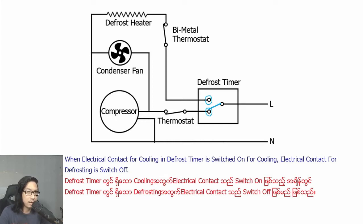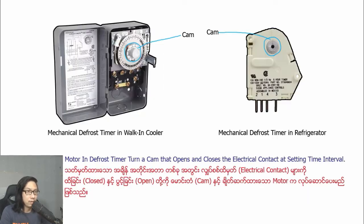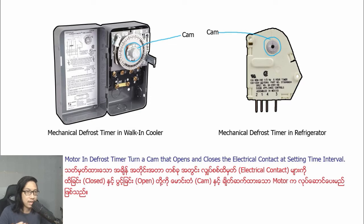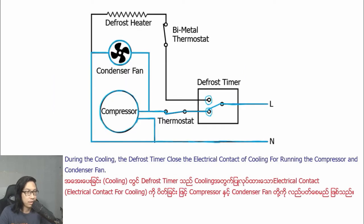When the electrical contact for cooling in the defrost timer is switched on for cooling, the electrical contact for defrosting is switched off. The motor in the defrost timer opens and closes the electrical contacts at certain time intervals. During cooling, the defrost timer closes the electrical contact for cooling, running the compressor and condenser fan.